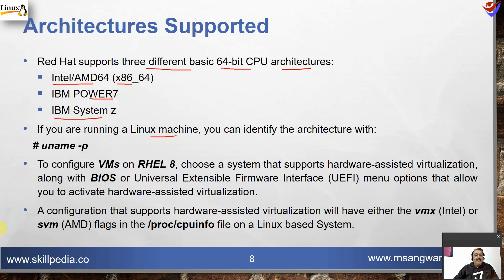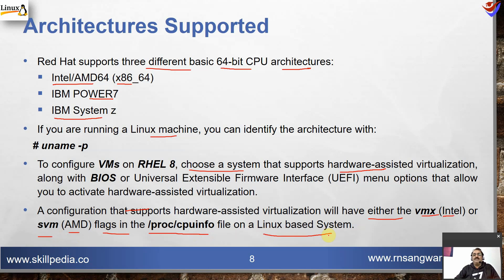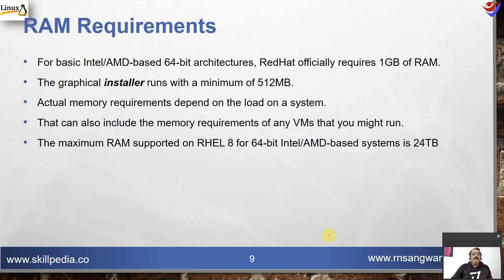To configure virtual machines on CentOS 8, choose a system that supports hardware-assisted virtualization, along with BIOS or UEFI menu options that allow you to activate it. A configuration supporting hardware-assisted virtualization will have either VMX (for Intel-based architecture) or SVM (for AMD) flags in the /proc/cpuinfo file on Linux-based systems.